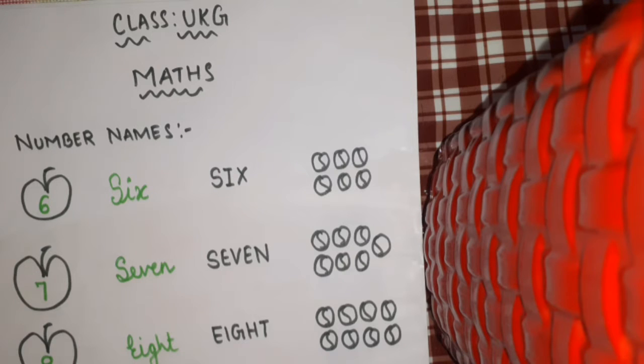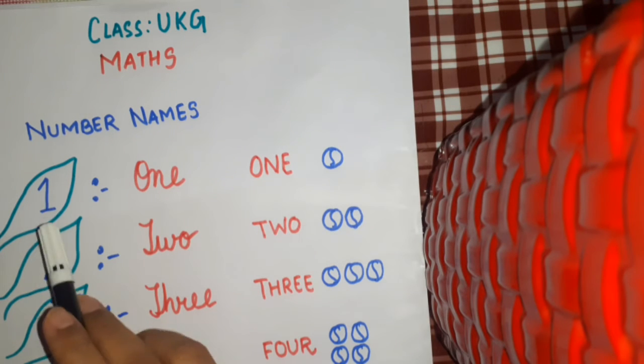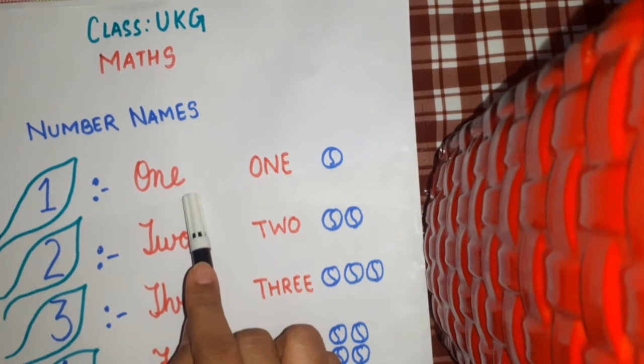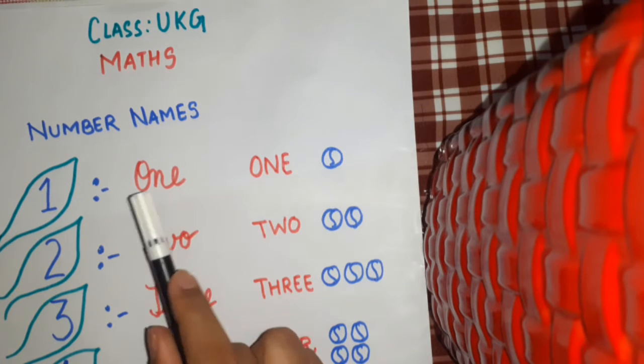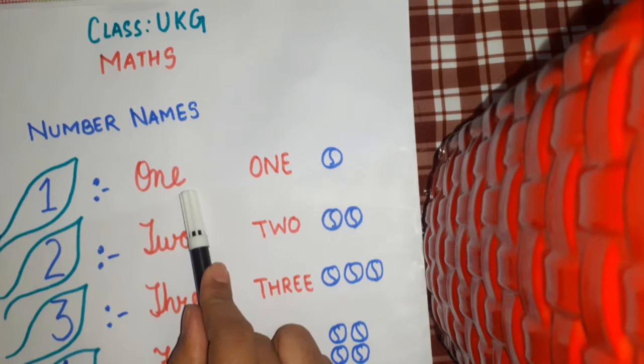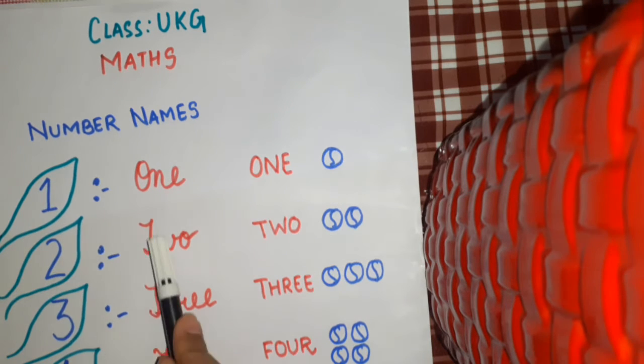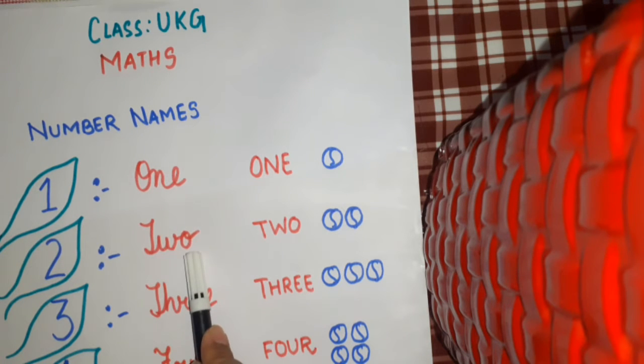First of all, we will revise what we have done in our last class. Okay. So, 1: O-N-E, 1. 2: T-W-O, 2.